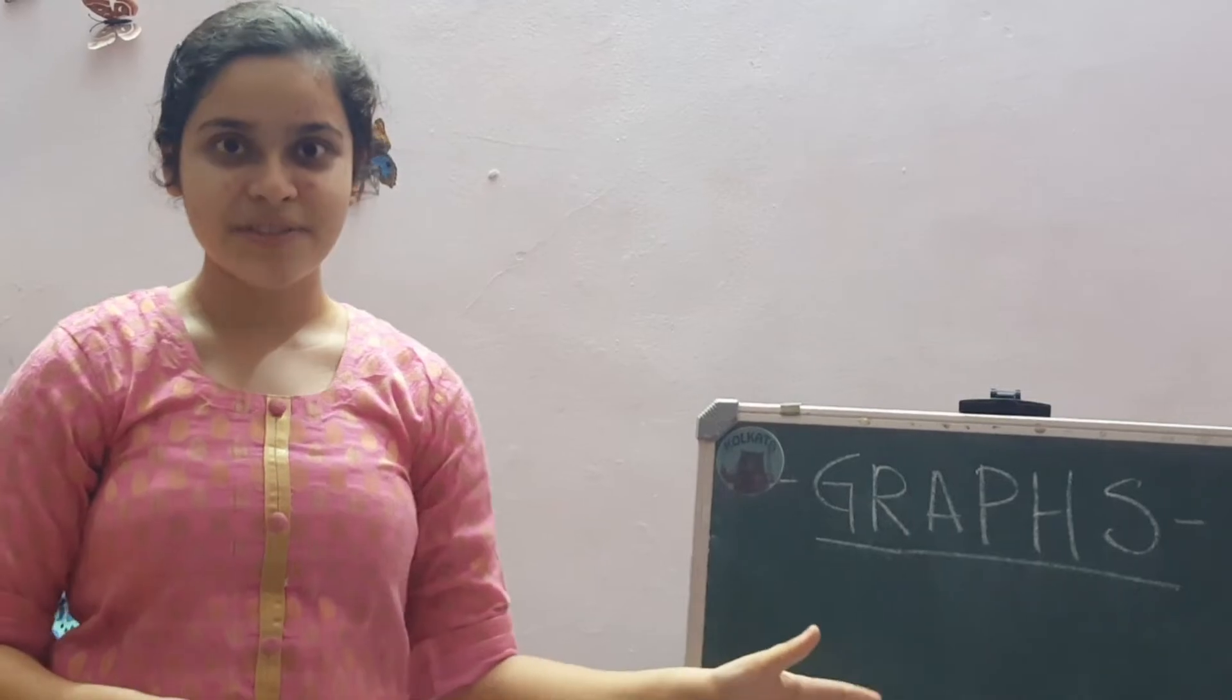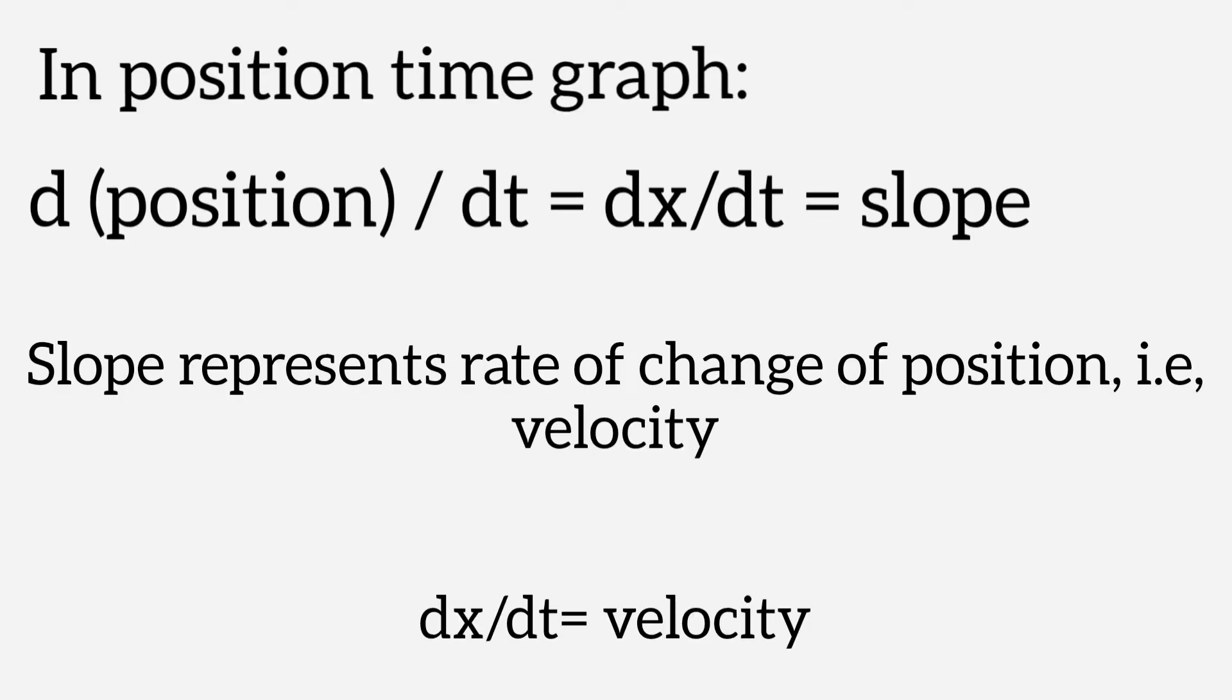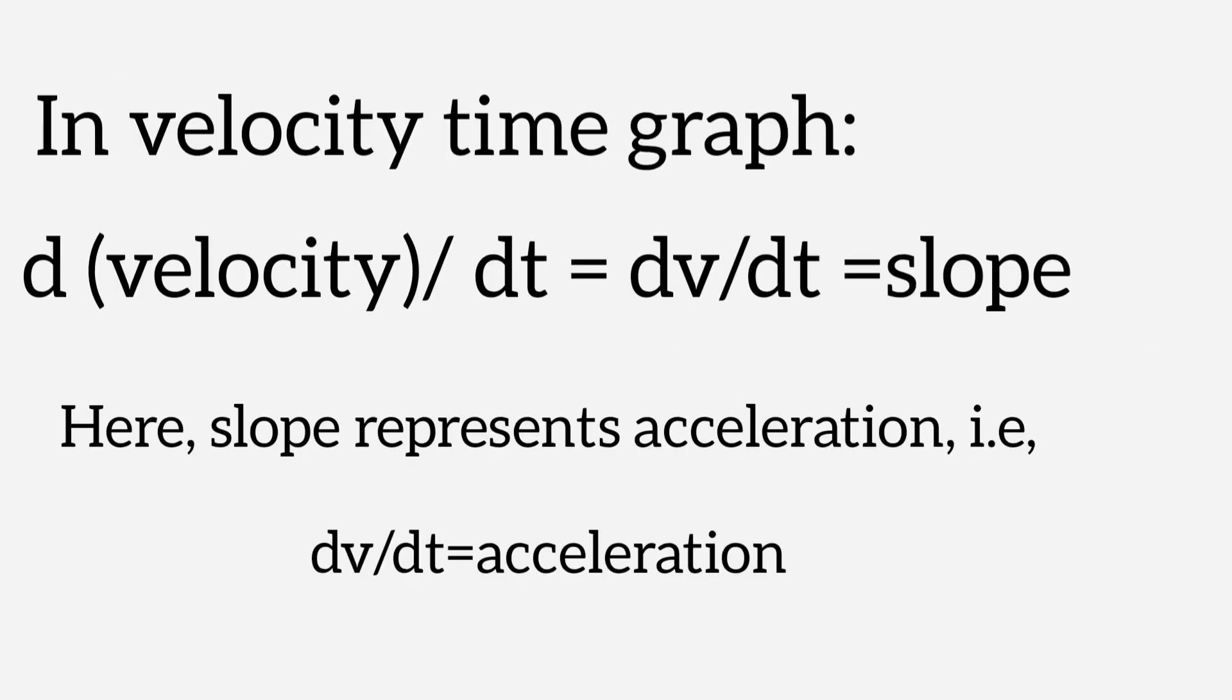In the session of today, let us discuss graphs. Before I begin to discuss the graphs, let me tell you the two categories of graphs we will be discussing today. Position time graph and velocity time graph. Here, it is important to note that the slope of the graph will be given by the derivative. That is, in position time graph, the derivative is dx by dt. That is, derivative of position with respect to time. Similarly, in velocity time graph, the derivative will be dv by dt. That is, derivative of velocity with respect to time. Hope this part is clear. And now, let us begin with learning the graphs.